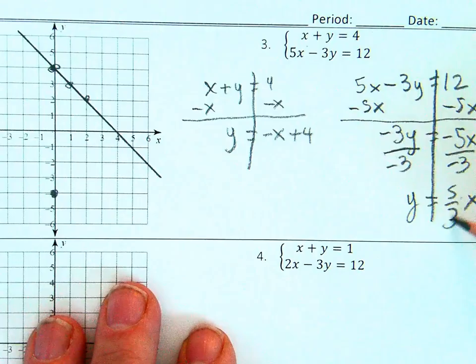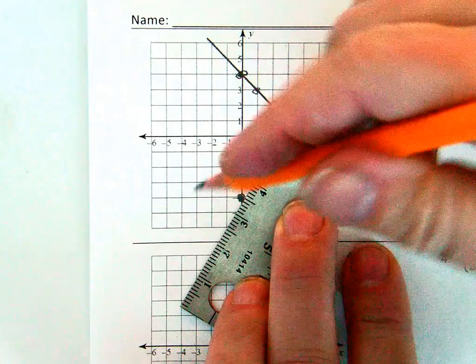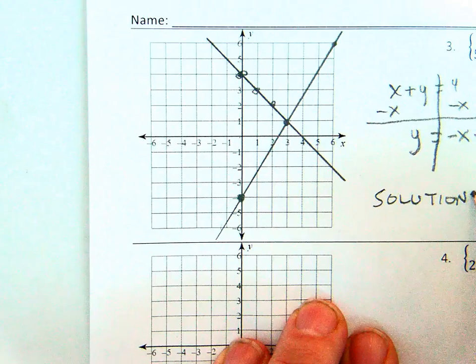The y-intercept is negative 4. The slope is 5 over 3. The solution is 3 comma 1.